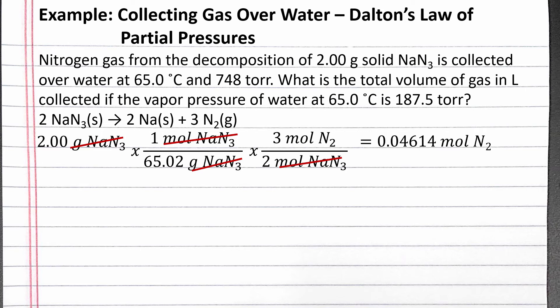Since we're collecting nitrogen gas over water, the total pressure is both the partial pressure of water vapor and the partial pressure of nitrogen gas. So the partial pressure of just nitrogen gas is the total pressure subtract the vapor pressure of water. Plugging in our numbers from the problem and solving, we should get a partial pressure of nitrogen gas of 560.5 torr.